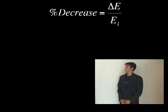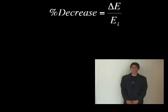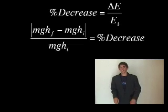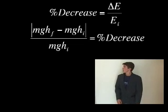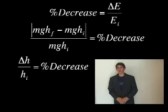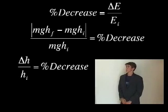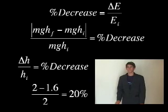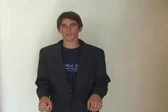So the percent decrease equals the change in energy over the initial energy. Luckily for us, the mass of the ball and gravity are the same throughout the equation. So the percent decrease in energy equals the difference in height over the initial height. So 2 minus 1.6 all over 2 equals 20%.